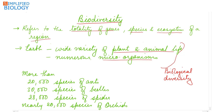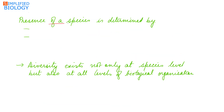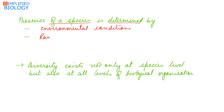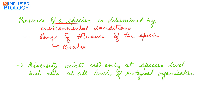There are more than 2,000 species of ants, 30,000 species of beetles, 28,000 species of spiders, and nearly 20,000 species of orchids. The presence of a species in a region is determined by the environmental conditions and the range of tolerance of the species.